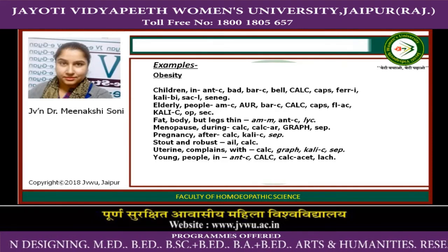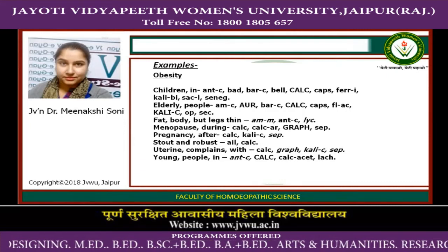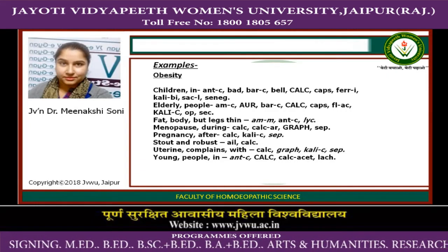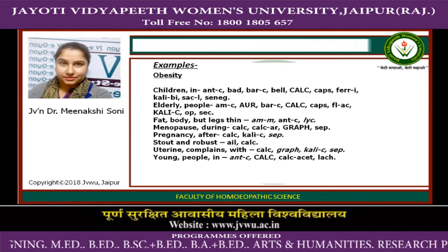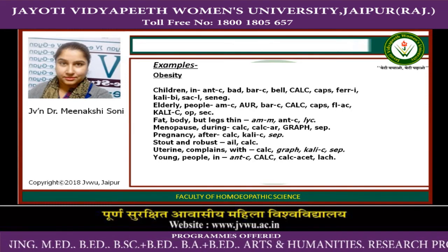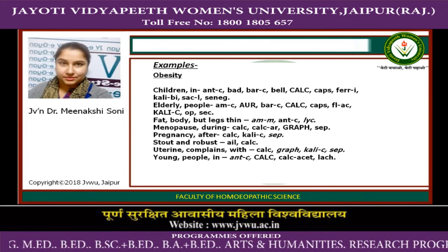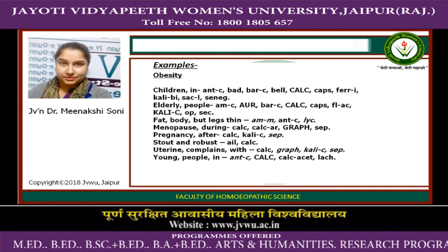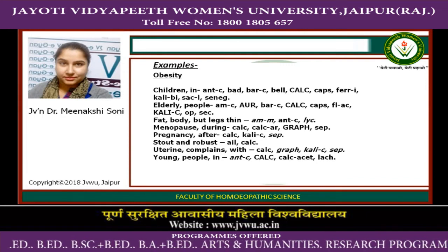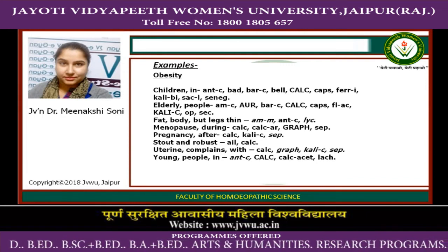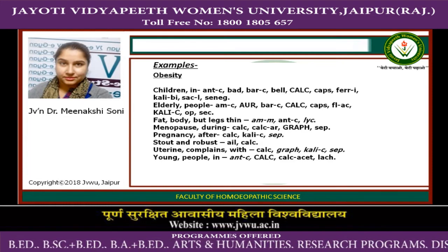Medicines for obesity include Antimonium Crudum, Bediaga, Calcarea Carb (the best medicine), Belladonna, Capsicum, Ferrum Iodatum, Kali Bichromicum, and Senega. For obesity in elderly persons, we can prescribe Aurum Metallicum, Calcarea Carb, Capsicum, Fluoric Acid, Graphites, Opium, and related remedies. For a fat body with lean constitution, Ammonium Muriaticum and Antimonium Crudum are the best medicines.